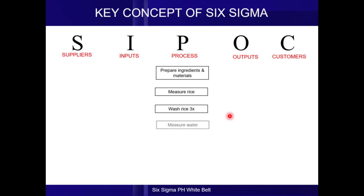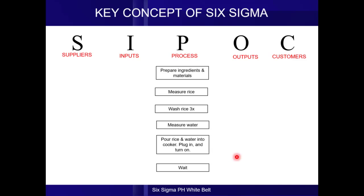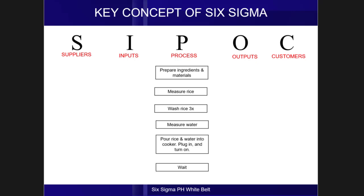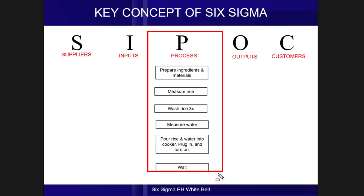After washing rice three times, the next step is to measure the water. Then you pour the rice and water into the rice cooker, plug it in and turn it on. The last step is to wait for the rice to be cooked. Now we're done with the process column.